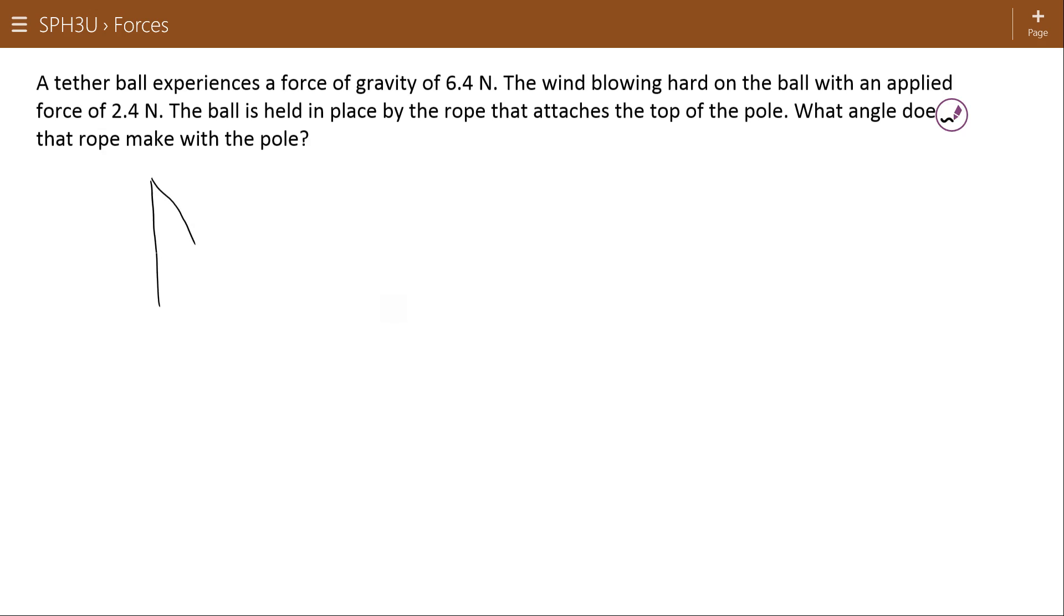So here's the tether ball. Here's the ball attached by a rope to a pole. And here it says it's held in place. Held in place means at rest, which means acceleration equals zero, which means net force equals zero. And that's how we know that this is a Newton's First Law problem.